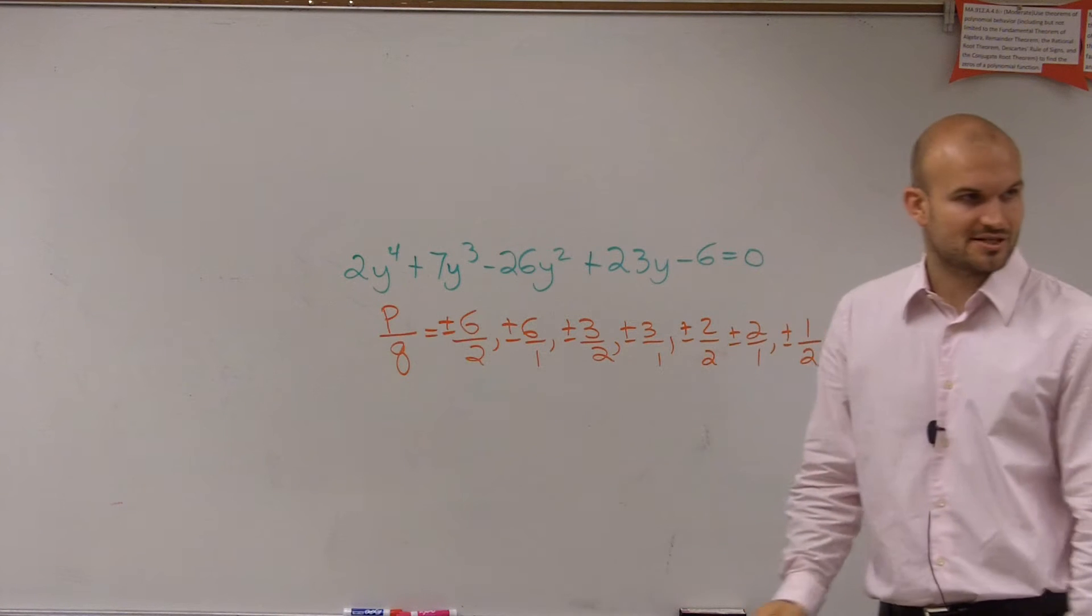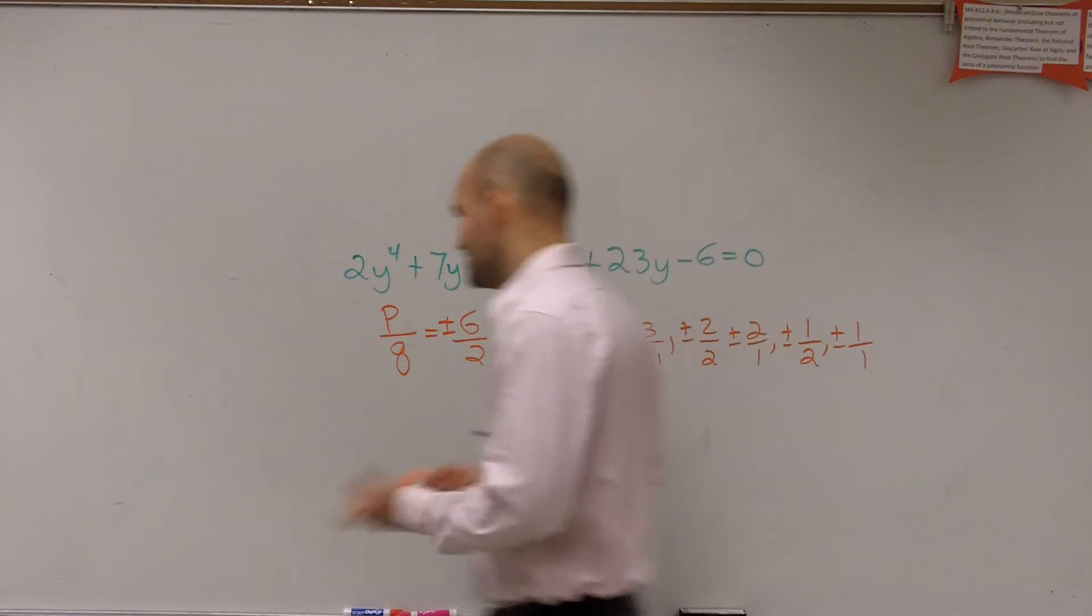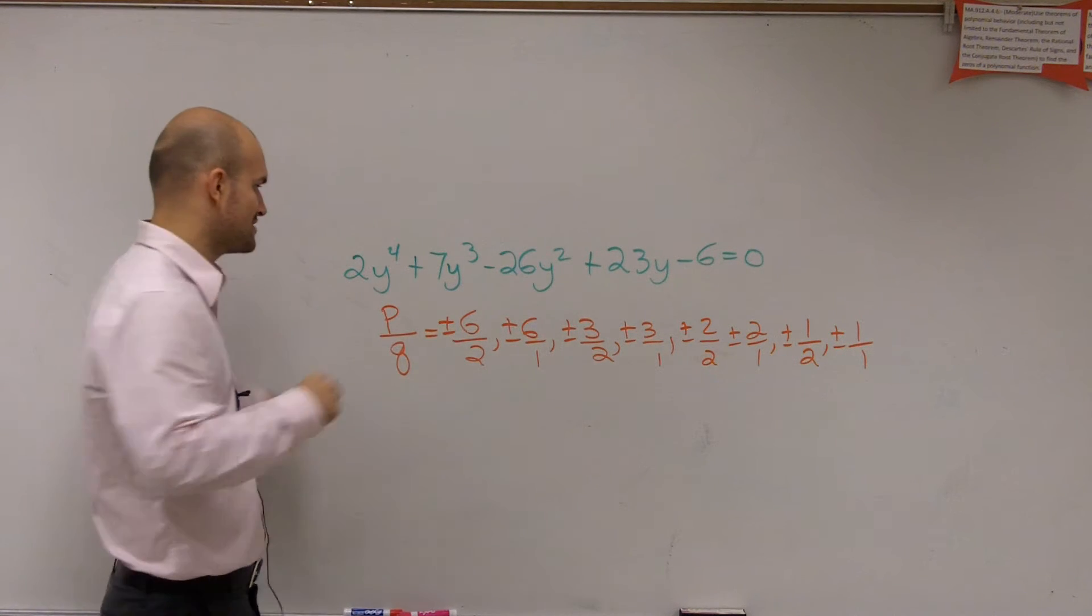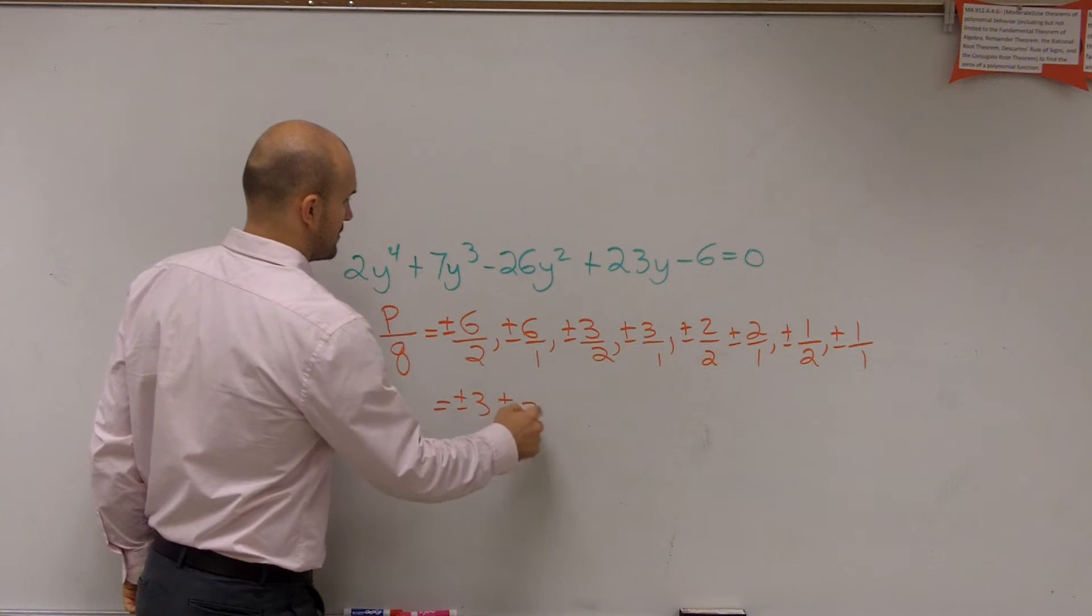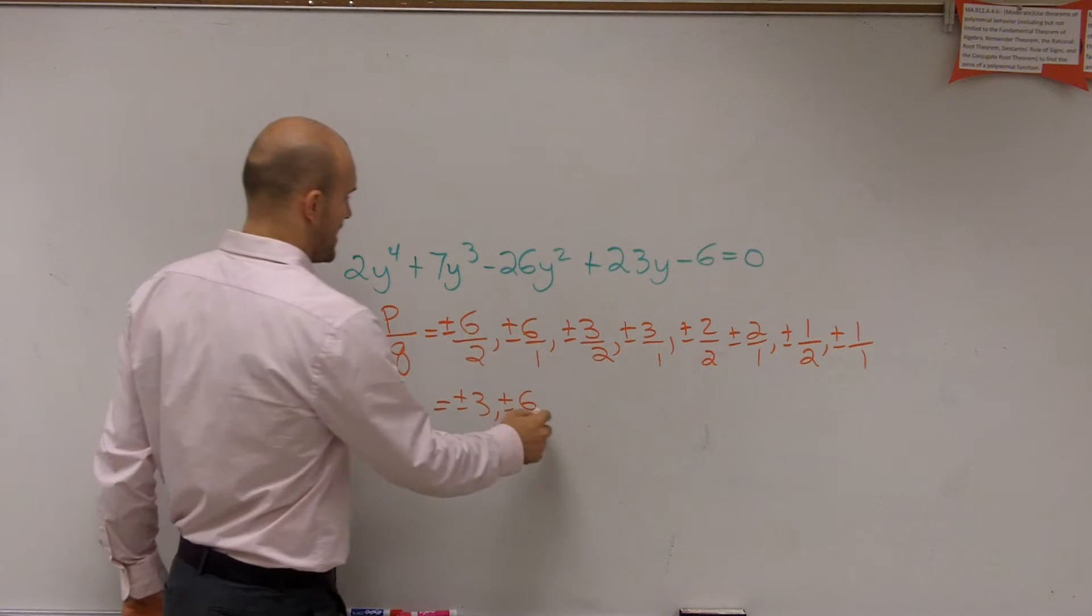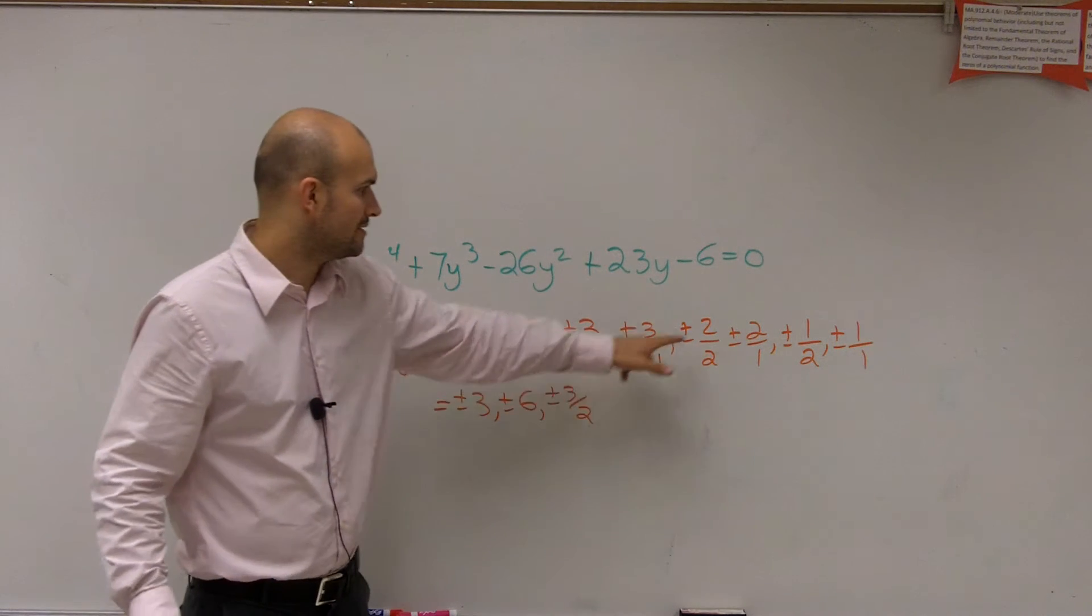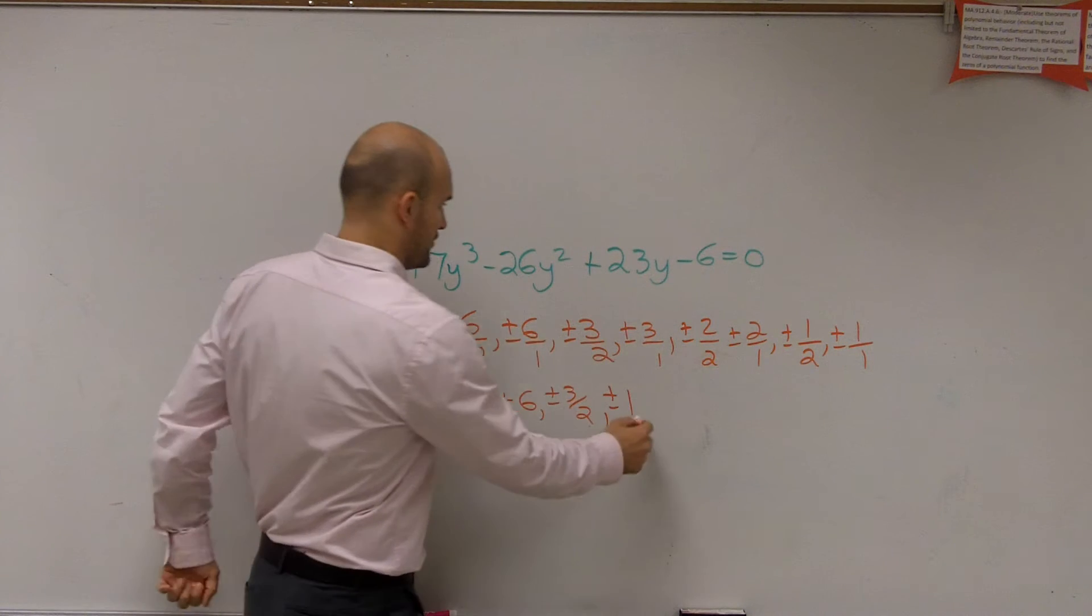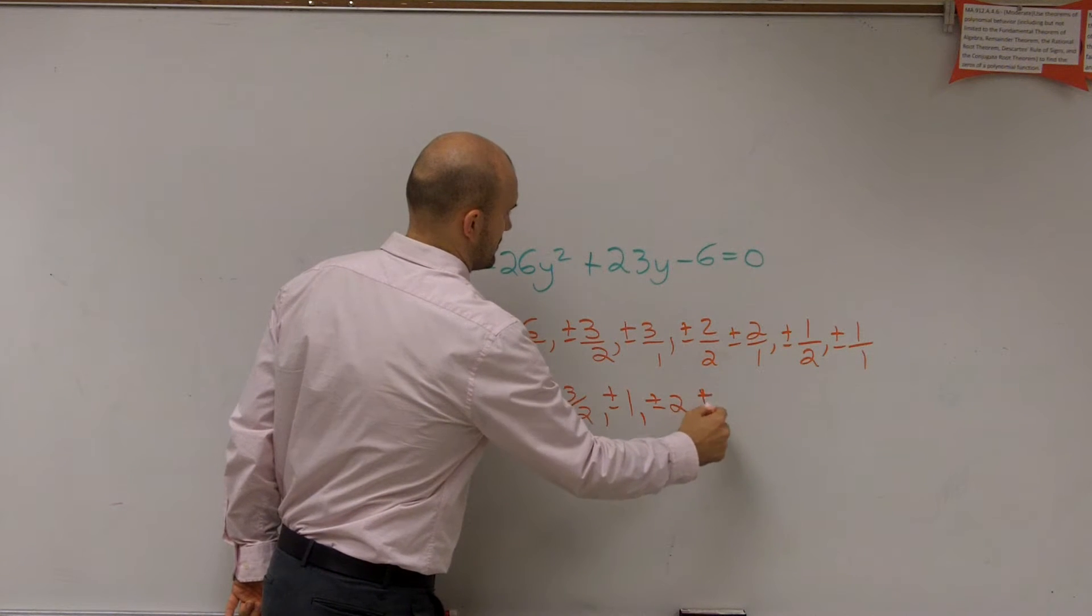Is that all the possible combinations? Did I miss one? I did all the factors of 6, and then I did all the factors of 2. Now, do we have some repeats? We don't need to write in all the repeats. 6 divided by 2 is going to be plus or minus 3. This one's plus or minus 6. Plus or minus 3 halves. Plus or minus 3, I don't need to do that again. Plus or minus 1. Plus or minus 2. And we don't have plus or minus 1 half.